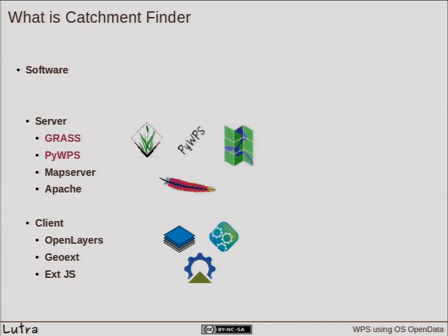PyWPS also depends on MapServer because the WPS standard defines that you can send back to the client not just numbers, letters, and strings but also maps — WFS and WMS results of your process. So PyWPS connects to MapServer to send back WMS or WFS data to the client.